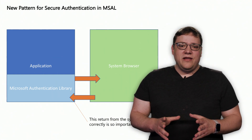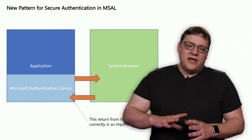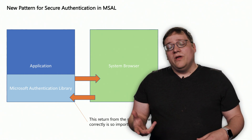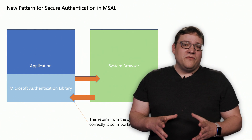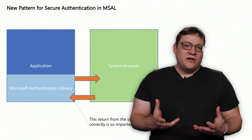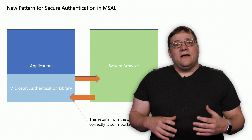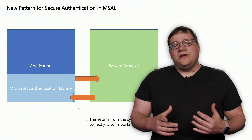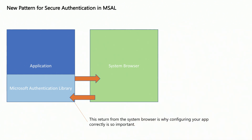Previously when people have used the system browser, there's been a usability issue because of the transition between the application and the system browser, whether it's Safari or Chrome on Android. The technology has changed now so that both Apple and Google have provided mechanisms so that the system browser can look native to the application while still maintaining the security boundary. On iOS it's called the Safari View Controller, and on Android it's called Chrome Custom Tabs. The MSAL library has support for both of these and uses them to create a better user experience, and you'll see that in the Xamarin demo.